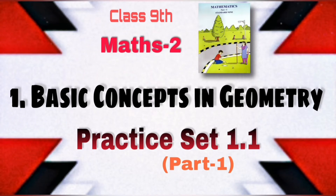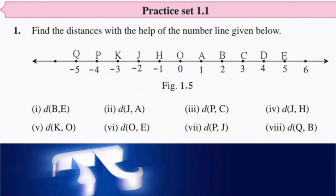Let's start with Practice Set 1.1. Question number 1 says: find the distances with the help of the number line given below. Here one number line is given, we have some points on that number line and their coordinates. We have to find the distance between the points which are present on the number line.